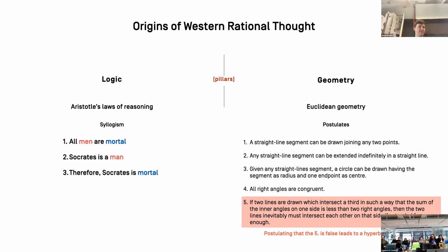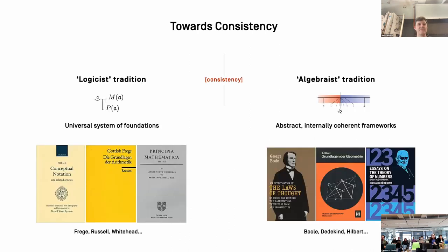The idea that axioms are empirical truths about our world started falling apart — this became a big crisis of mathematics in the 19th century. Mathematicians like Russell said, 'We do not know what mathematics is and what it is about,' completely losing the sense of what mathematics is. Therefore there was a need for a new idea to prove the trustworthiness of theories and knowledge systems, and this idea was consistency.